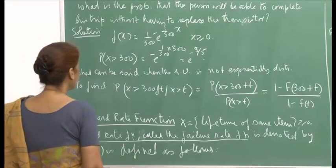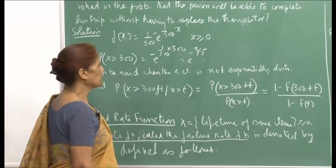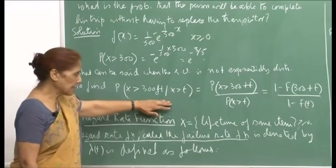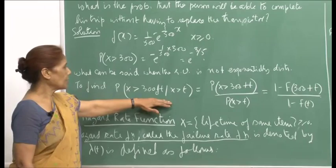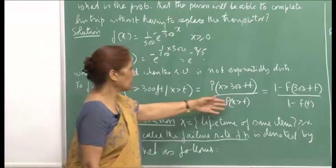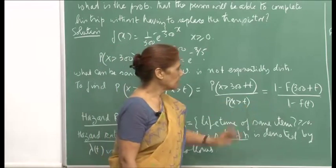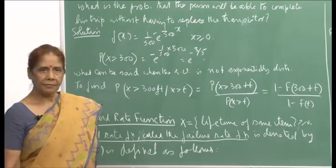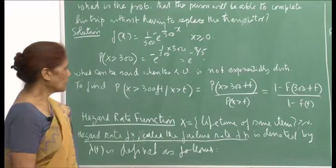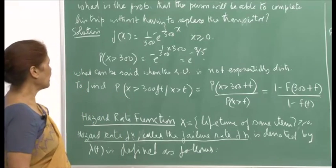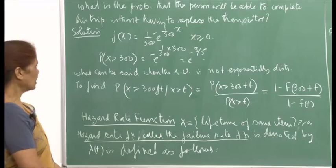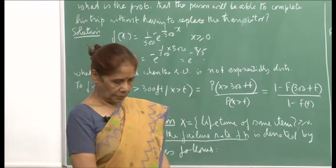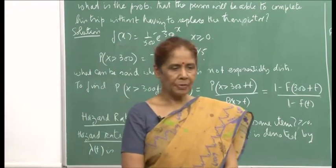When the random variable is not exponentially distributed, the memoryless property does not hold, and we must treat it as a regular conditional probability in terms of the capital F. This illustrates the advantage of having a random variable that is memoryless.